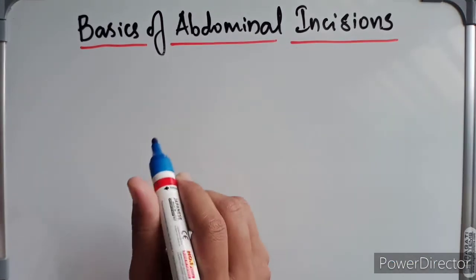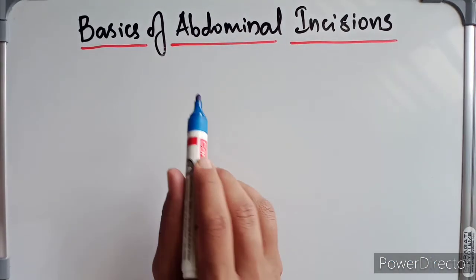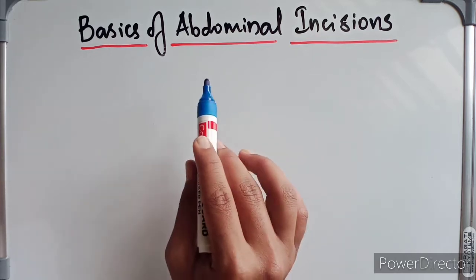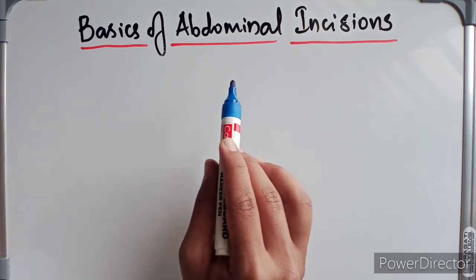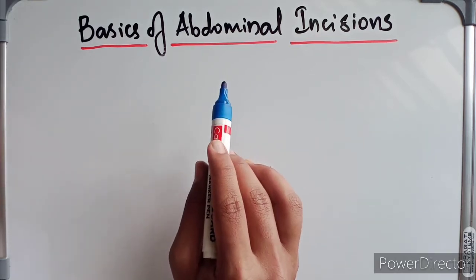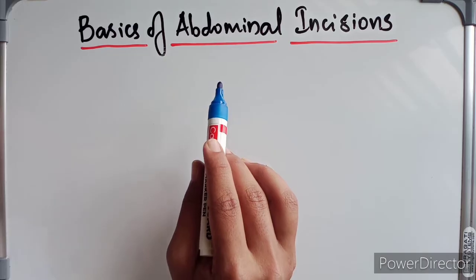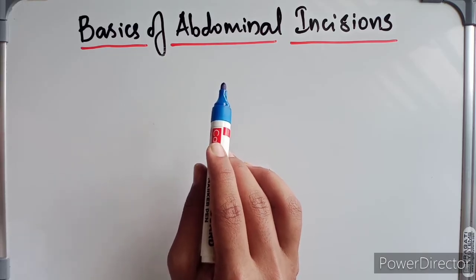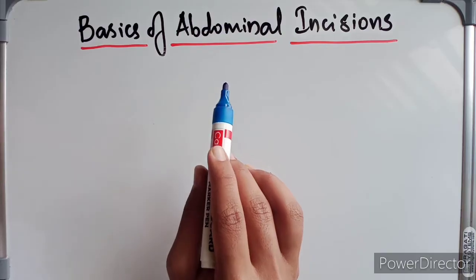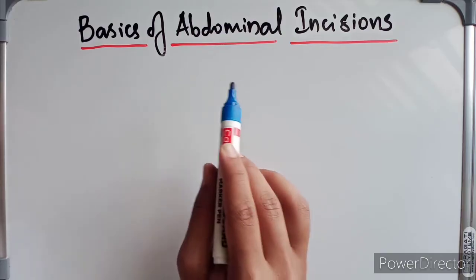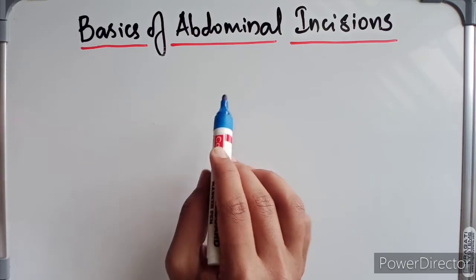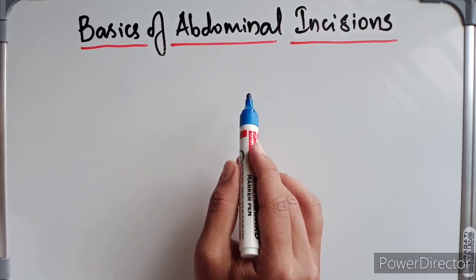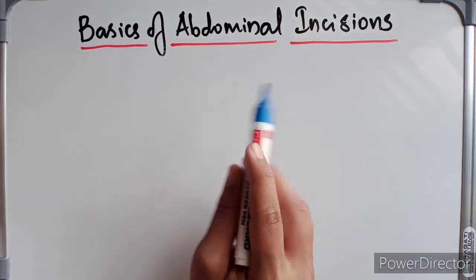Coming to abdominal incisions — these incisions are commonly given by surgeons to explore the abdominal cavity and perform the desired surgery. Especially UG students should have some idea about these incisions, because these incisions may lead to incisional hernias.